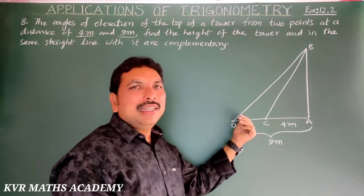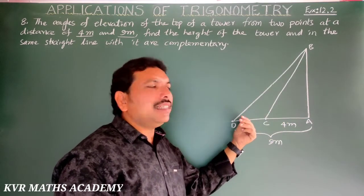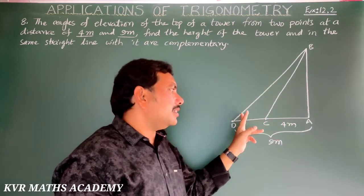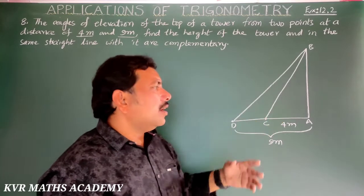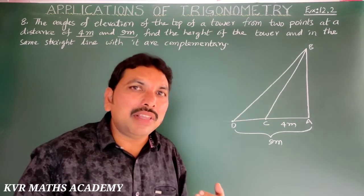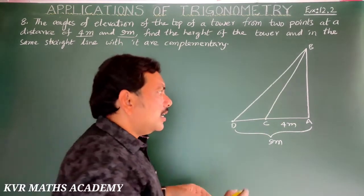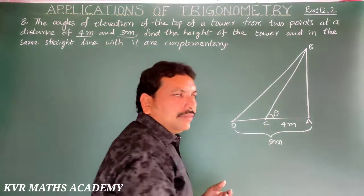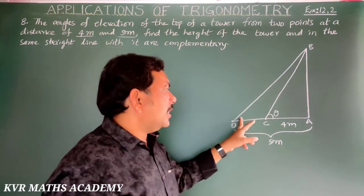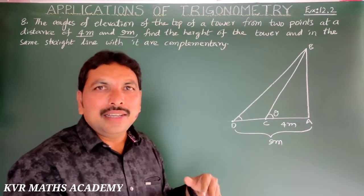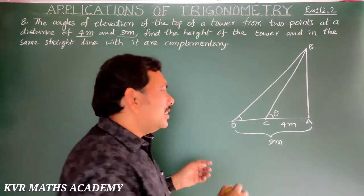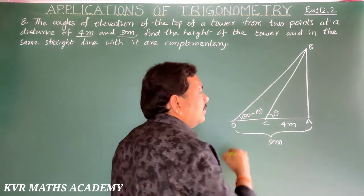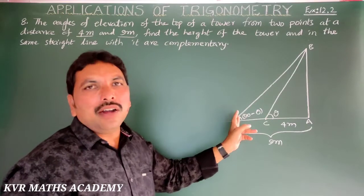Complementary means the sum of the angles is 90 degrees. So here, if one angle is theta, then the other angle D is equal to 90 minus theta — both are complementary.